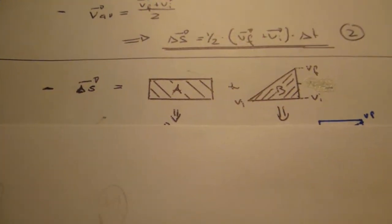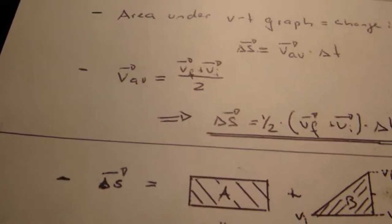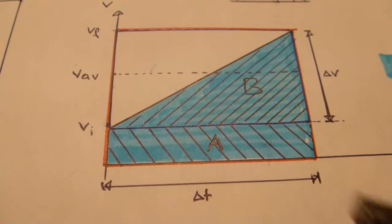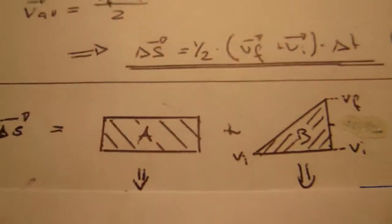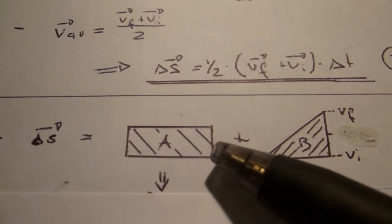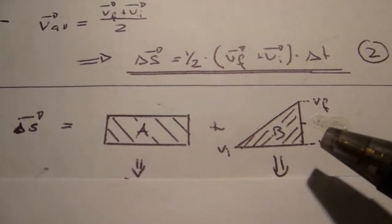For number three we start with the changing position as the area, all the blue area here under the curve. This time we split it up. We look at our area in one rectangular shape and one triangle, B.